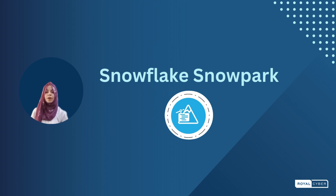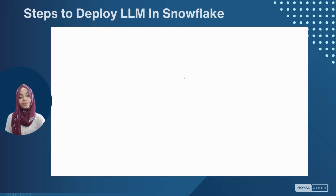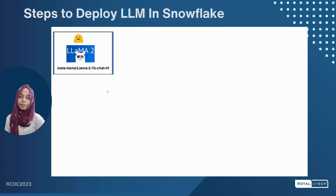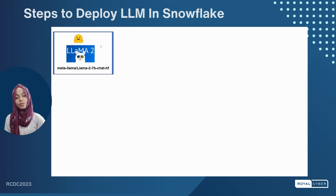To deploy an LLM in Snowpark, first we have to prepare the model for deployment. Let's assume we want to deploy Llama 2 from Hugging Face. We can use Llama 2 through the convenient Hugging Face Transformers API. Note that to use Llama 2 from Hugging Face, you would need Hugging Face tokens too.